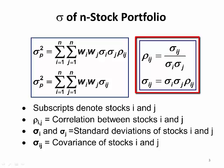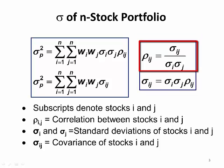Looking at the equations in the box to the right, you can see that algebraically these two formulas are identical. Substituting the equation for correlation rho into the upper equation, the denominator cancels out and you have the lower formula.